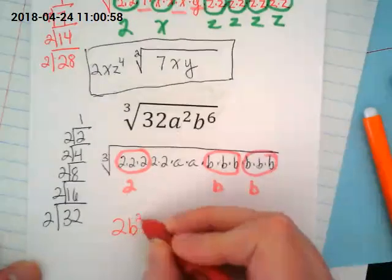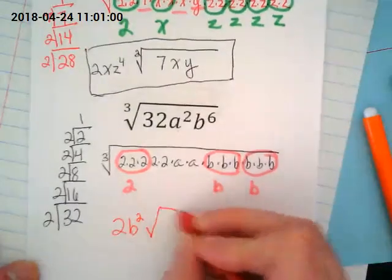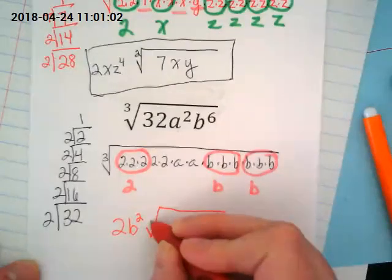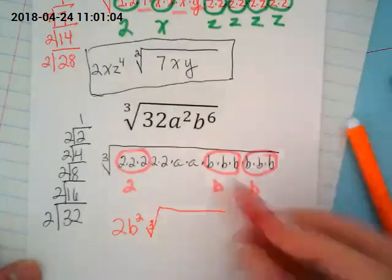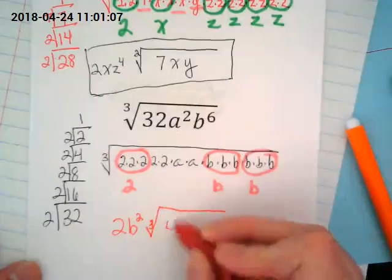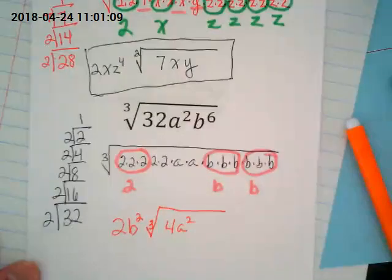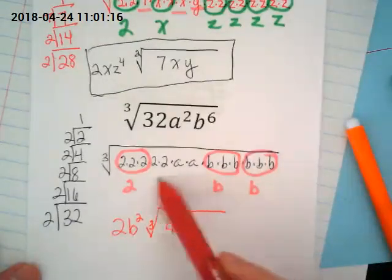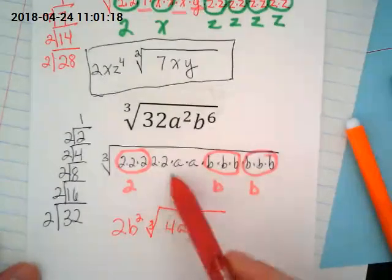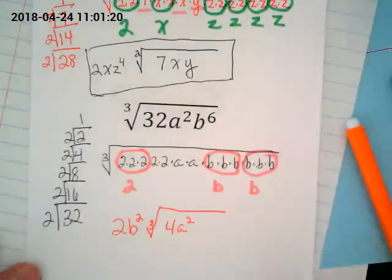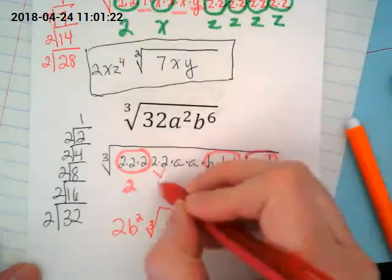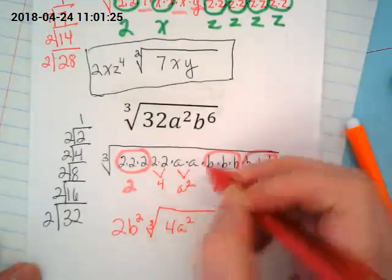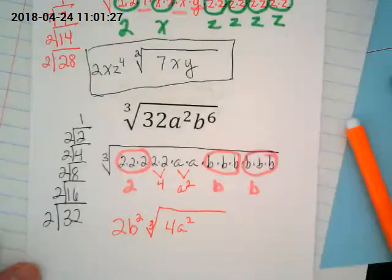Two B squared, radical sign. What's my index? Three. And then what stays inside? Four A squared. Where did the four come from? The four came from, I went back and I re-multiplied what was in there. I've got two times two and A times A. So this became four, and this became A squared, and they're staying inside of the radical. That makes sense.